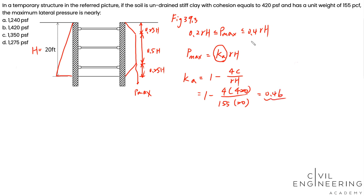Okay, so you can see that your Ka is larger than 0.4. So your P max is going to be 0.4 gamma h, 0.4 times gamma 155 times h 20. Alright, so that's 1240 psf.